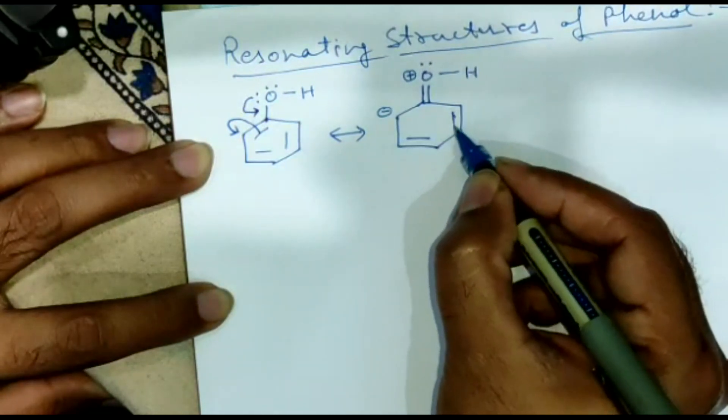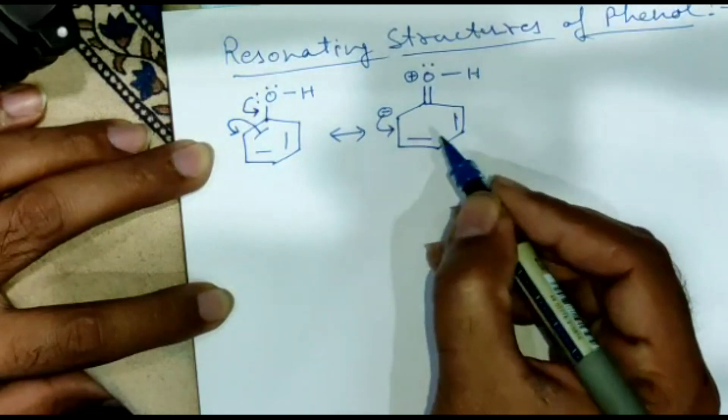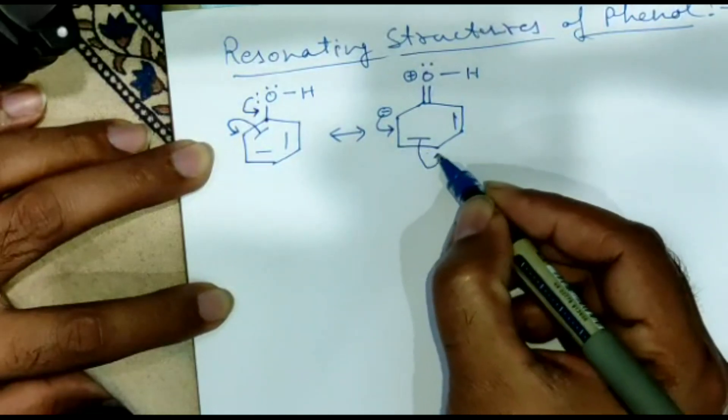And the rest of the double bond will remain as it is. Now this charge gets inside and this shifts towards the para position.